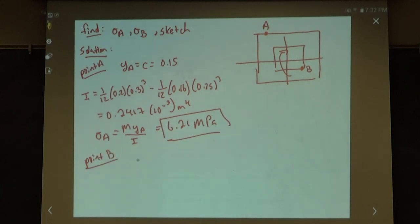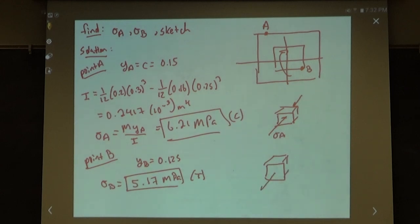We find our I equals 1/12 base times height cubed minus 1/12 base times height cubed, and we get 0.2417 times 10 to the negative third meters to the fourth. For our stress at A, we have everything we need: M, Y of A, and I. Plugging everything in, we get 6.21 megapascals. For point B, our YB is 0.125, so our sigma at B would be 5.17 megapascals in tension. This one's in compression. Our volume element for A would look like this, and our volume element at B will look like this.